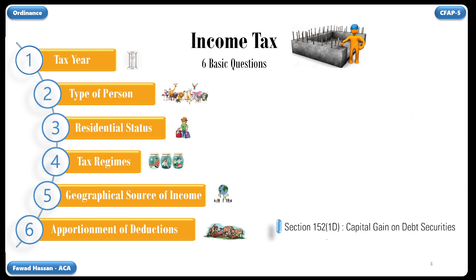Section 152 Subsection 1D. This subsection is about payment to non-resident for capital gains on debt securities.